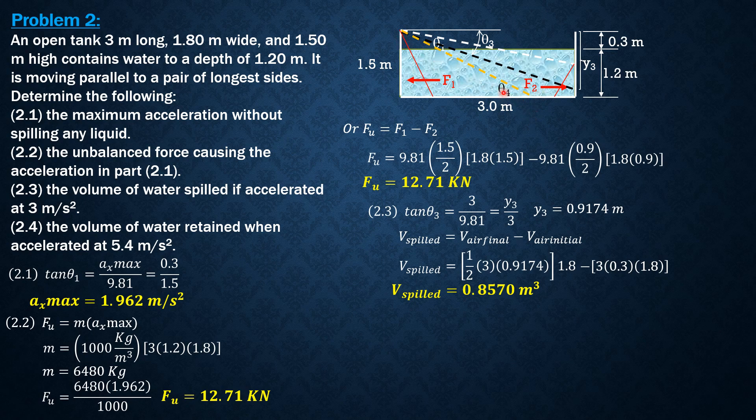This is the resulting surface. We'll call this theta 4. The distance from this corner to the point of intersection is X. The volume of water retained is 1 half of X times 1.5 times 1.8 meters wide. Tangent theta 4 equals 5.4 over 9.81, also equals 1.5 over X. Solving for X: 2.725 meters.